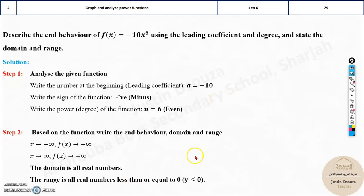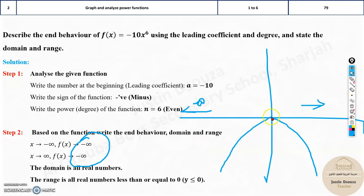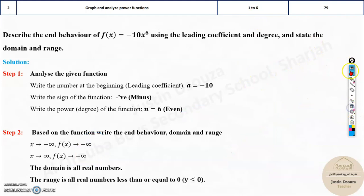And then the domain is all real numbers. But the range, as we just now saw, is all numbers less than or equal to 0. Why? Because there is no part of the graph that's going upwards. So this is the thing about parabola.